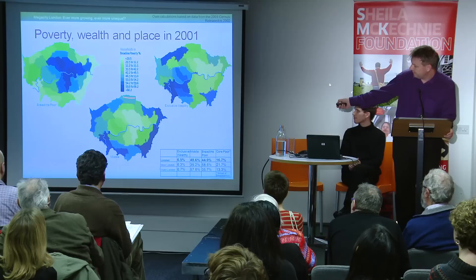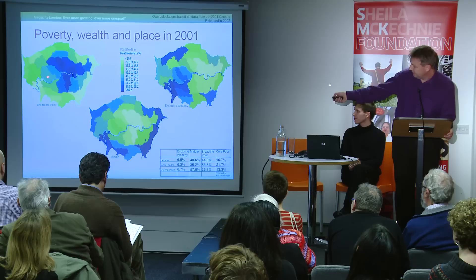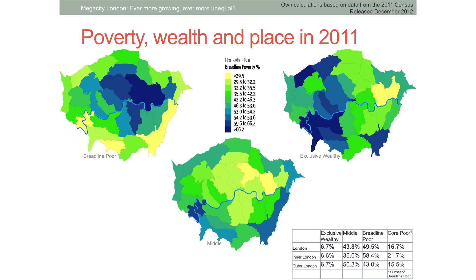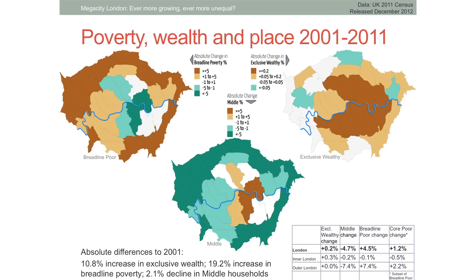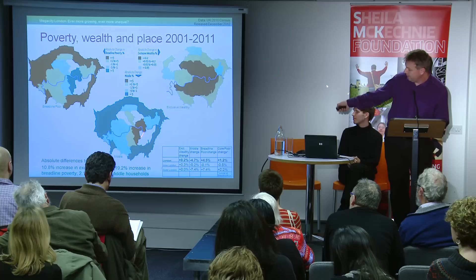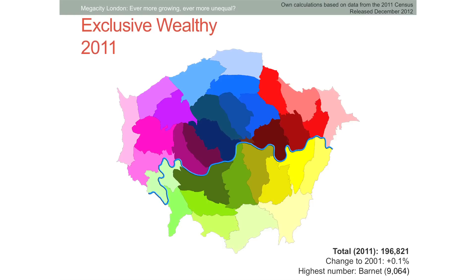The static maps won't be a great surprise: the highest rates of poverty — up to sixty to sixty-six percent in the worst London borough — are in central London towards the east. The exclusive wealthy are concentrated to the southwest, and the middle group is squeezed out to the edge. That's 2001. Here's 2011: there's been an increase in breadline poverty — more poor people in London — but most of the increase has been on the outside. There's been a slight increase of exclusive wealthy and a decrease of people in the middle. The increase in poverty is in the outer boroughs. The biggest increase in exclusive wealthy is in a large part of central London, and the only part to see an increase of people in the middle is just north and south of the river.